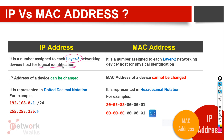A MAC address, on the other hand, is assigned to each Layer 2 networking device and is used for physical identification — meaning physically where this device is at the moment, and to which local area network it has been connected.